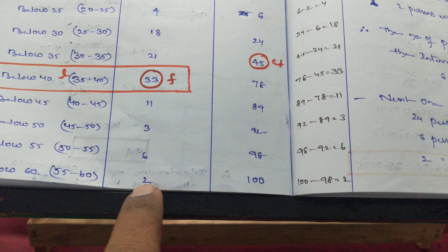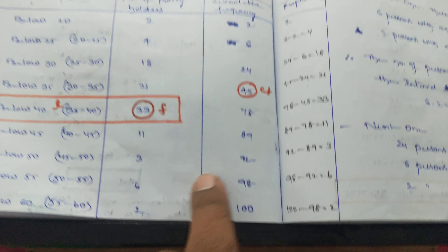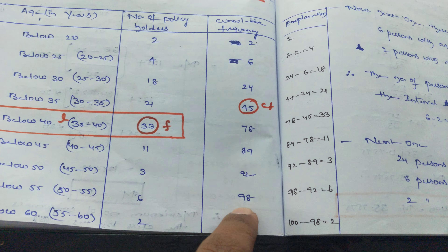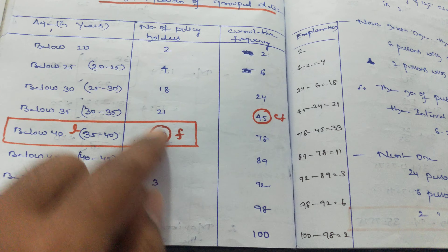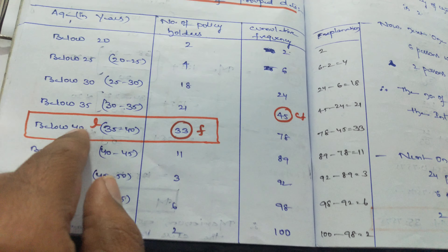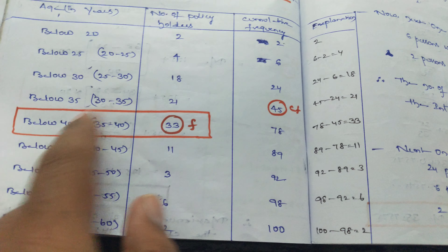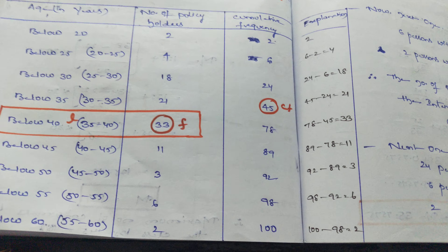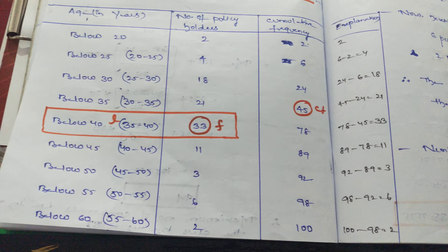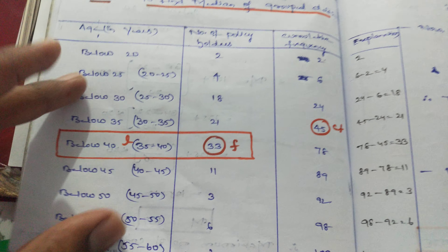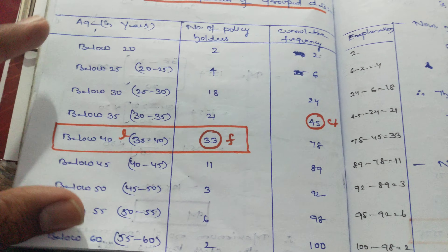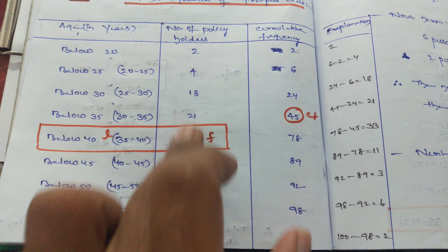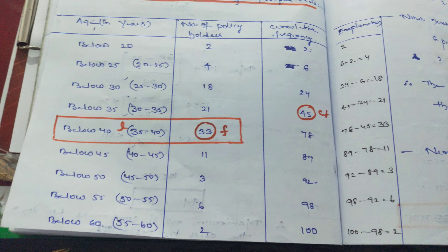So in this way, from the cumulative frequency column we find out our actual frequency. Write this column, and then as usual — whatever we did in the previous sums, same method. Just here the extra step is identifying the frequency column from the cumulative frequency.